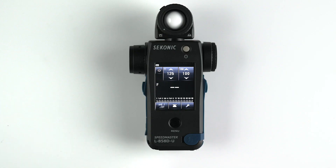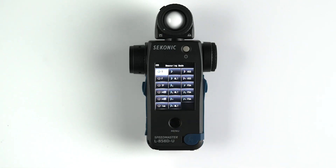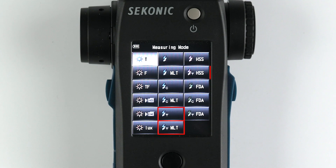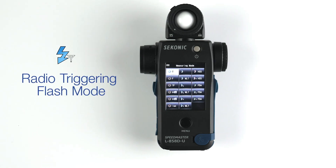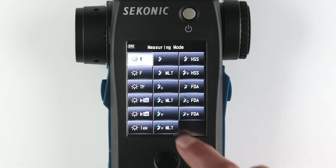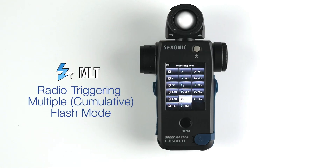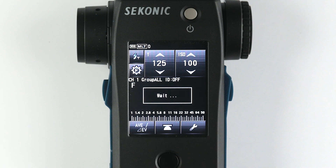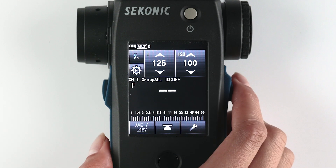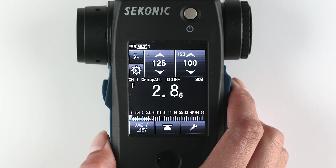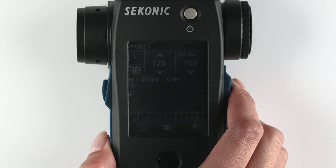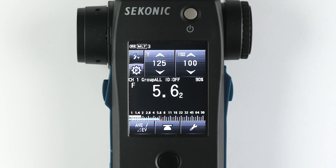Next, select your desired measuring mode. The Godox radio trigger will be active in these four measuring modes. Radio triggering flash mode — this is the basic wireless triggering mode and should be used for basic lighting setups. Radio triggering multiple cumulative flash mode — this mode is used when you want to meter multiple flashes for the same exposure, often used by still life photographers to build up the depth of field.